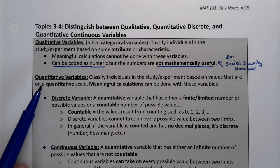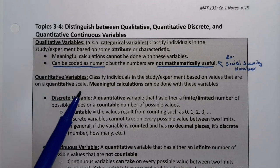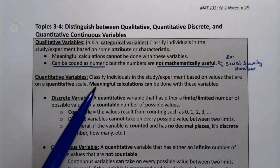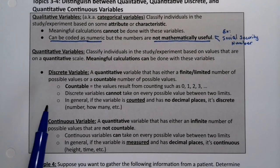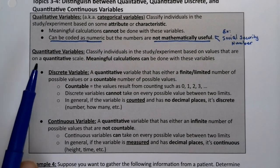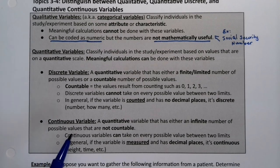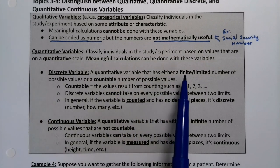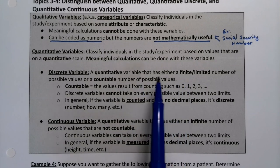Now, quantitative variables are numeric values that can have meaningful calculations. And then there are two types, two subtypes of quantitative variables. There's quantitative discrete and quantitative continuous. And that distinction there is actually a bigger deal than you might think. Discrete variables are either countable or they're finite. So there's a limited number of possible values and often both.